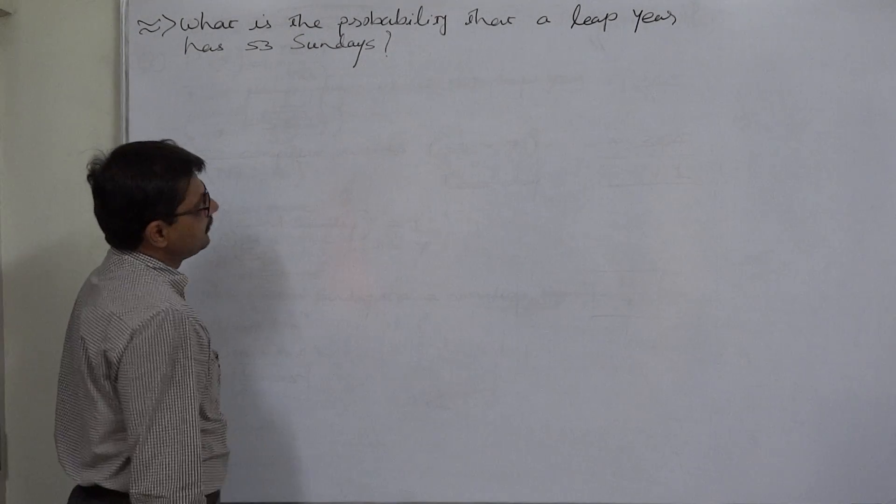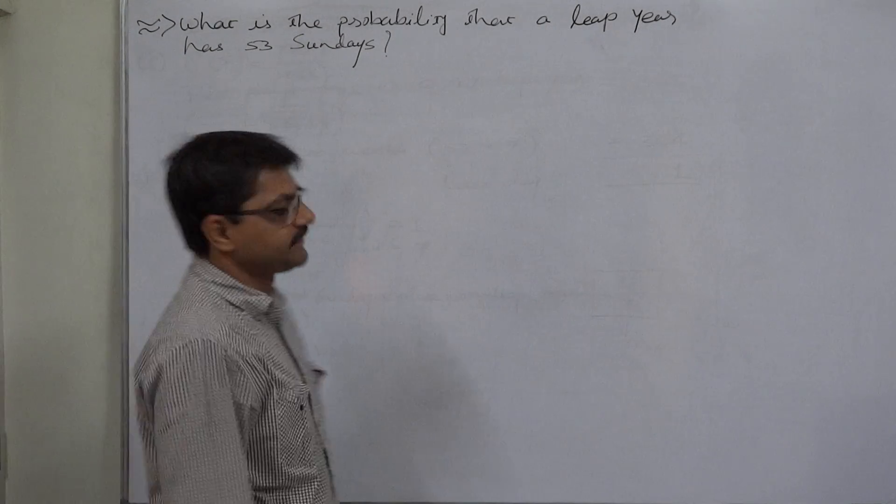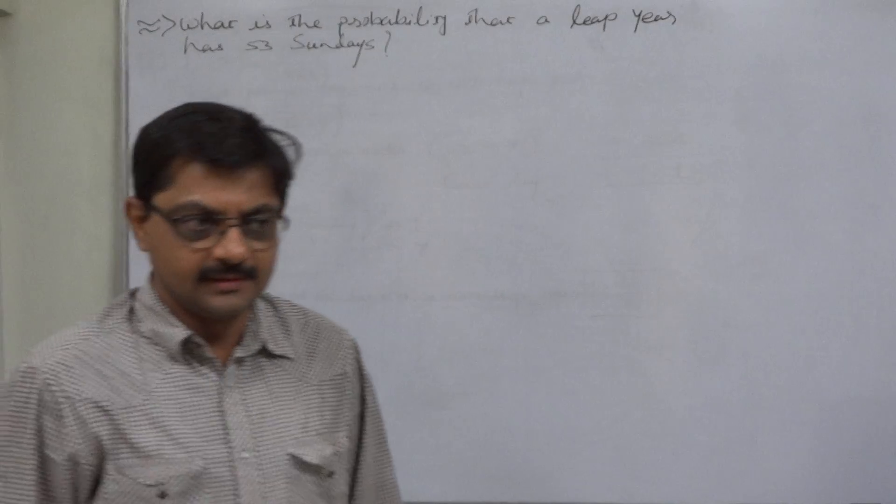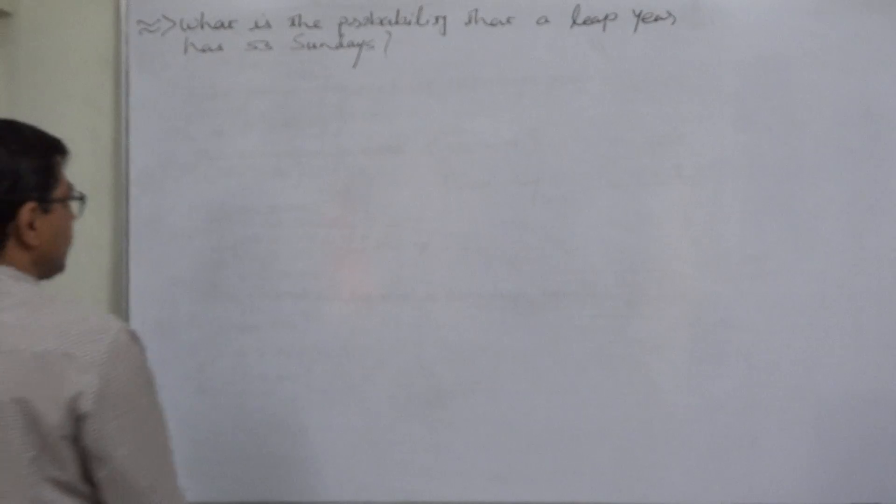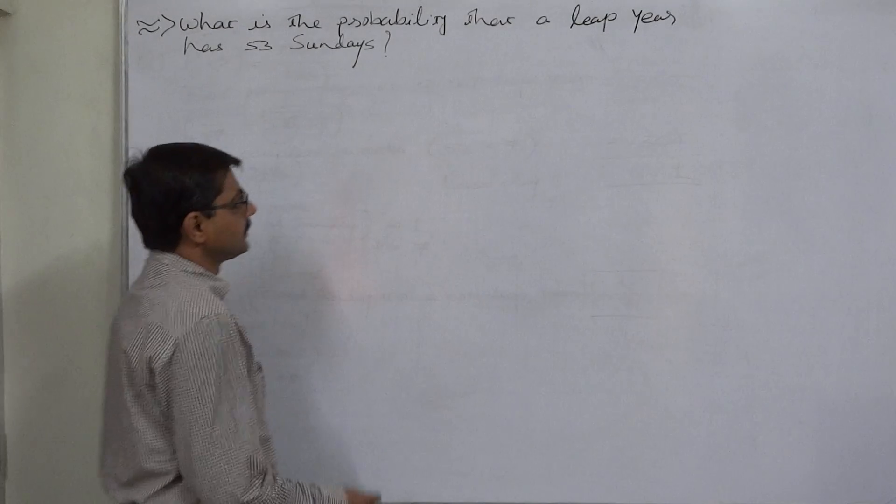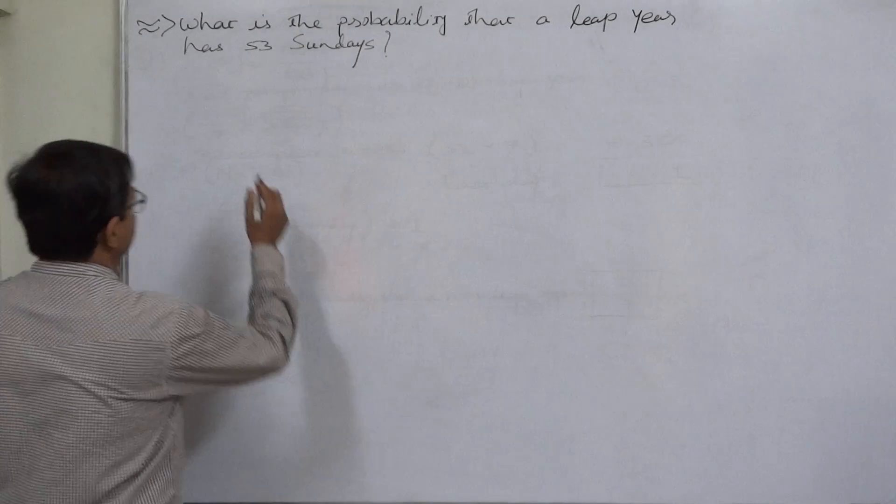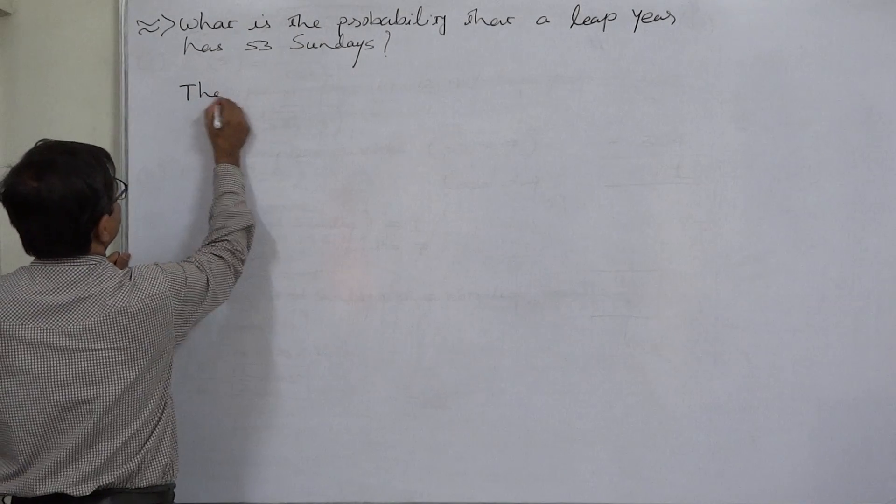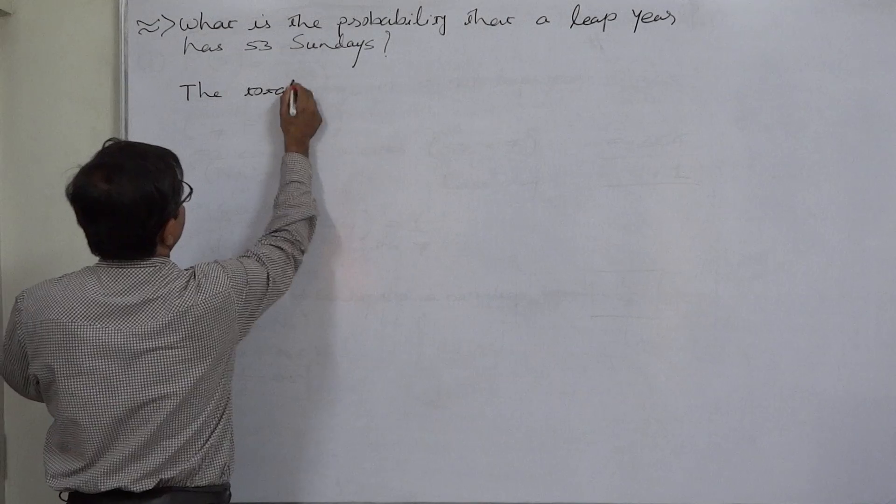Now let us discuss what is the probability that a leap year has 53 Sundays. In the previous case it was a non-leap year. Now this is the case of a leap year. How many total number of days are there in a leap year?